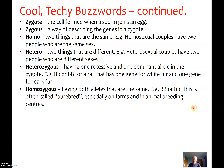Homozygous means having both alleles that are the same. There are two possibilities here — it's a bit like there's only one type of heterosexual couple (male-female), but there are two types of homosexual couple (lesbian and gay guys). So you can have two types of homozygous information. That's called purebred.